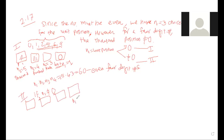Now let's move to permutations. Frequently we are interested in all possible orders or arrangements of a group of objects — these are called permutations. Different arrangements are called permutations. For example, consider three letters A, B, and C. The possible arrangements are: ABC, ACB, BAC, BCA, CAB, CBA — six distinct arrangements.